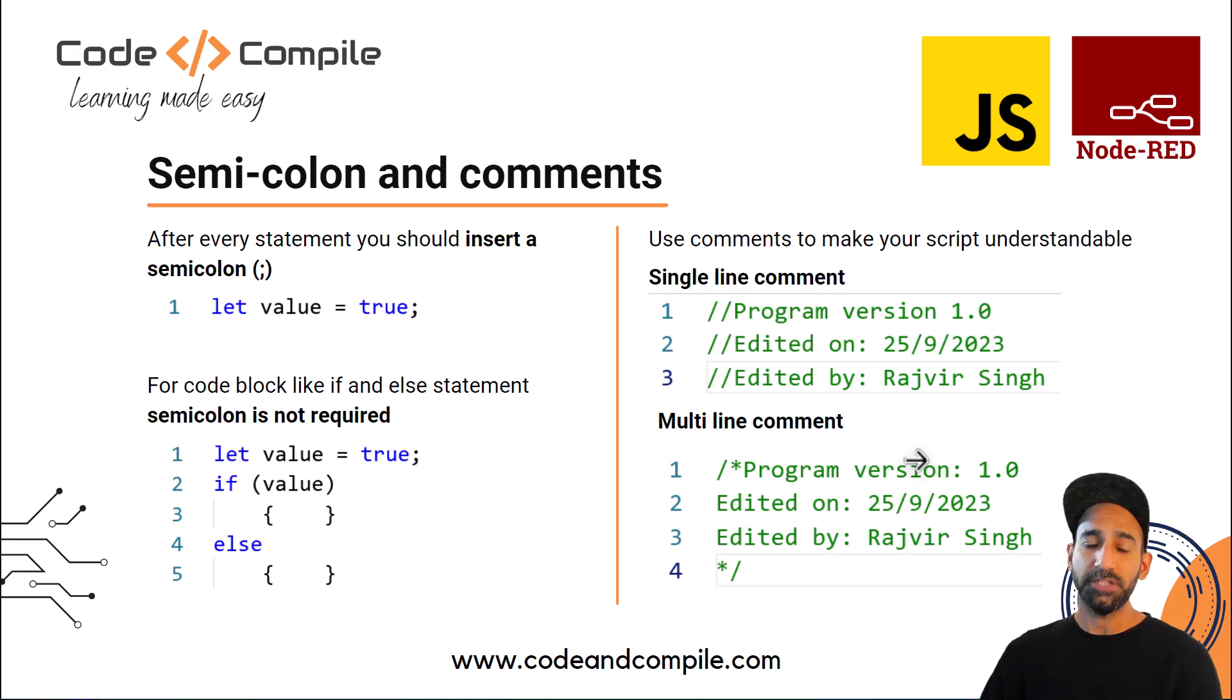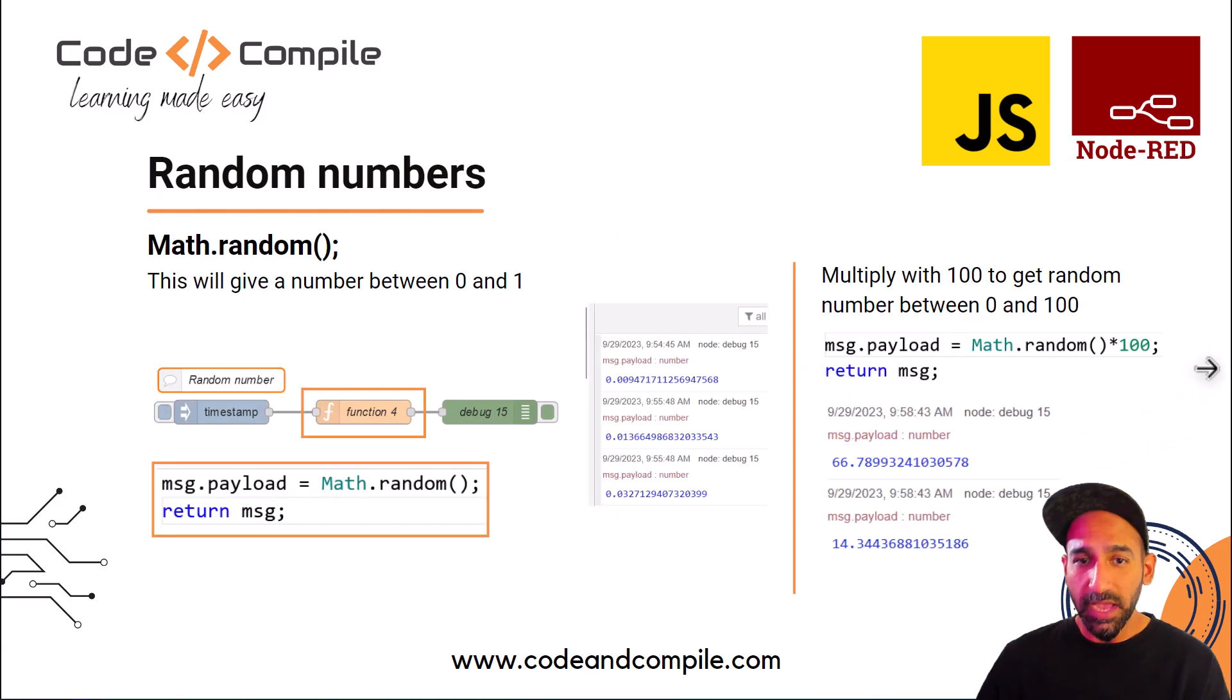This is how you can add comments in your program, and comments are very important. For example, to mention your program version, who wrote this program, on which date, and if you're making changes, what changes did you do. This can be easily documented when you have comments. Otherwise people will not understand what's happening. Adding comments is very good.